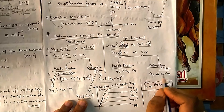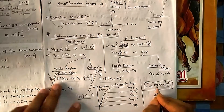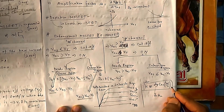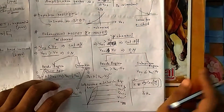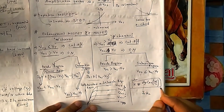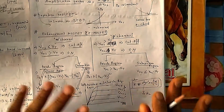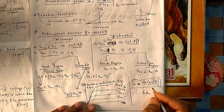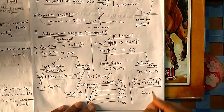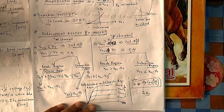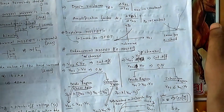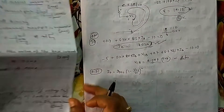The constant k is defined as (μ_p × C_ox × W/L) for P-channel and (μ_n × C_ox × W/L) for N-channel, where C_ox is the oxide capacitance and W/L are the MOSFET dimensions. You just need to remember these; deep detail is not required for numerical problems.